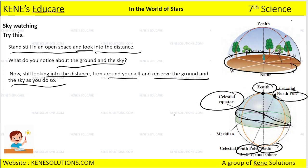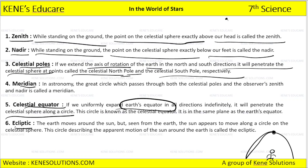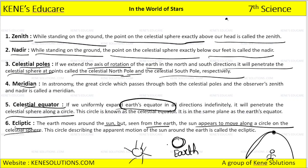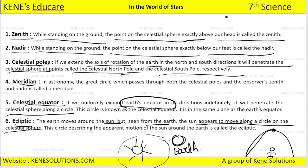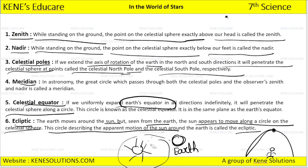What is the ecliptic? The earth moves around the sun, but seen from the earth, the sun appears to move along a circle on the celestial sphere. Since earth rotates around the sun, but if we are standing on earth, we see that the sun is describing a circular motion. The apparent motion of the sun around the earth is called the ecliptic.